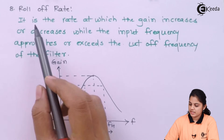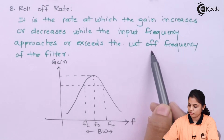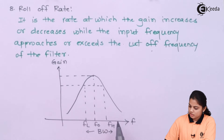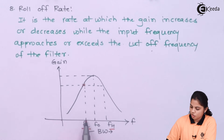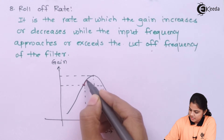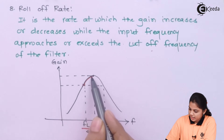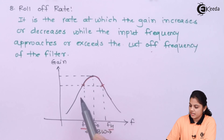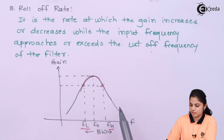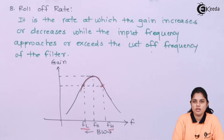The next one is roll-off rate — it is the rate at which the gain increases or decreases as the input frequency approaches or exits the cutoff frequency. For a band pass filter, the gain increases as the input frequency reaches the lower cutoff frequency, reaches maximum near center frequency, then decreases toward the higher cutoff frequency, and decreases further beyond it. This increase and decrease in gain as frequency crosses the cutoff points is the roll-off rate.